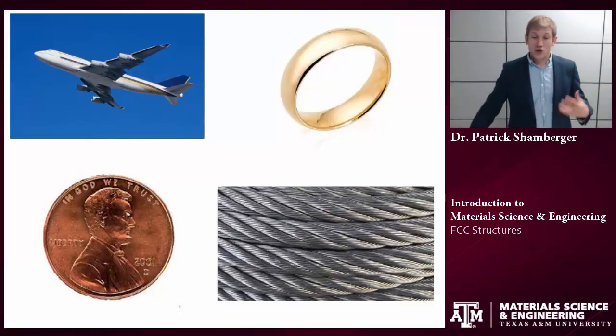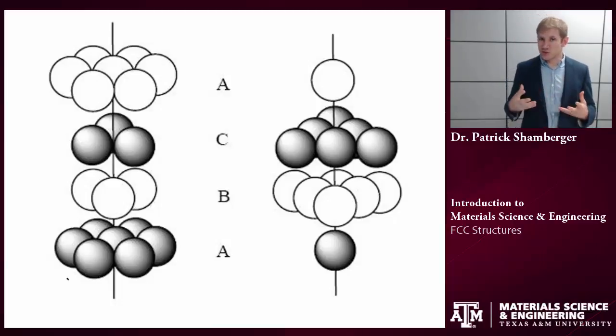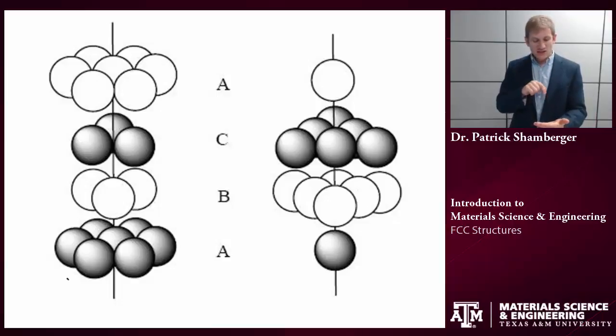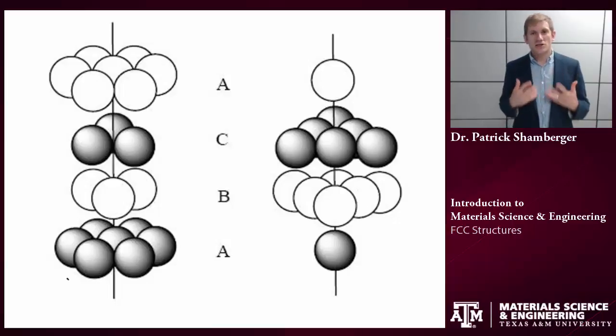So how do we construct an FCC structure? Remember, it's a close-packed structure, and we make close-packed structures by stacking together close-packed planes. Now this is a little interesting, because close-packed planes, you're used to seeing six-fold and three-fold rotation symmetry in those planes. When you just look at a cube to begin with, it's oftentimes hard to see that three-fold rotation symmetry axis, but you'll see it momentarily.